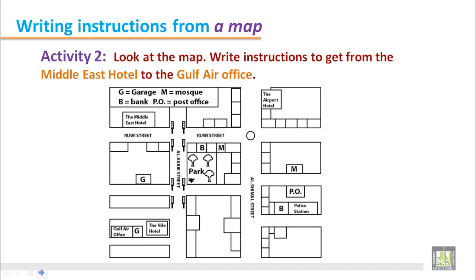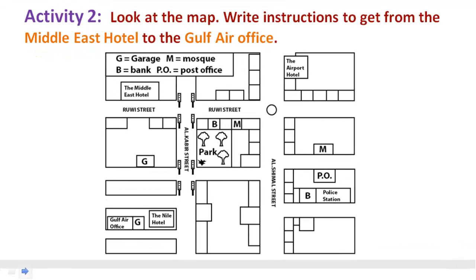Writing instructions from a map. Activity two: look at the map and write instructions to get from the Middle East Hotel to the Gulf Air office. In this map we can see the Middle East Hotel is here, and you have to go to the Gulf Air office, which we can find here. So if we would like to give instructions on how to go from the Middle East Hotel to the Gulf Air office...